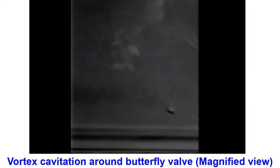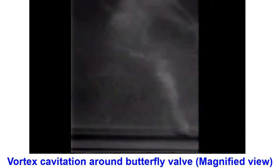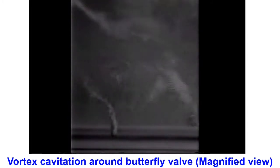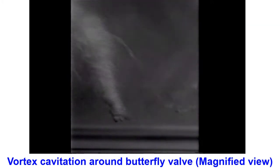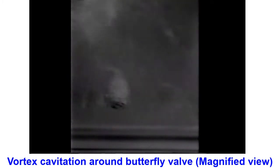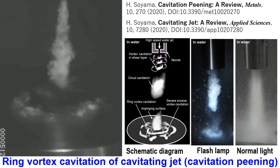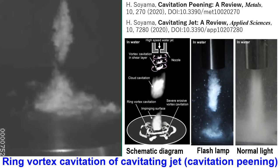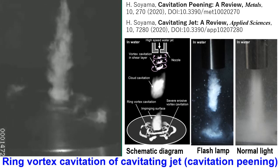These longitudinal vortex cavitations produce a severe impact. At cavitation peening, ring vortex cavitation is a very important phenomenon.